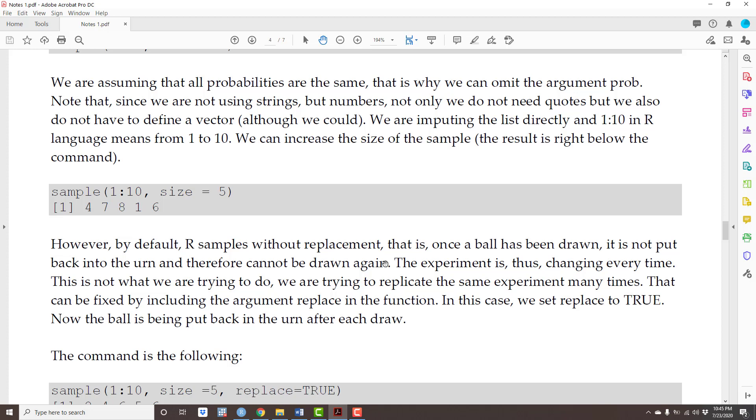Clearly, the experiment is changing over time. The first time I draw a ball, it is 1 ball among 10. The second time I draw a ball, it is 1 ball among 9 because I didn't put the first ball back. But that is not what I am trying to do. I am trying to do the same experiment many, many times. So what I have to do is tell R to put the ball back. How do we do that?